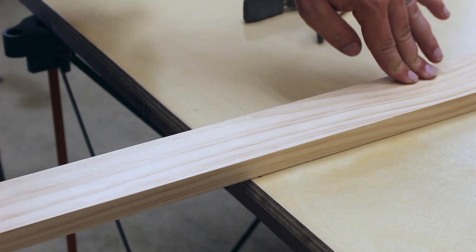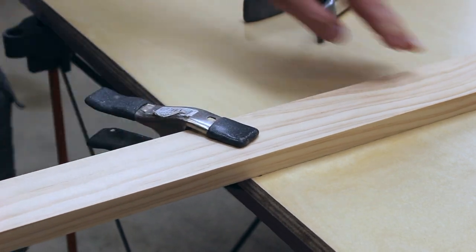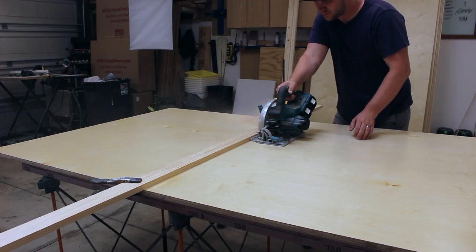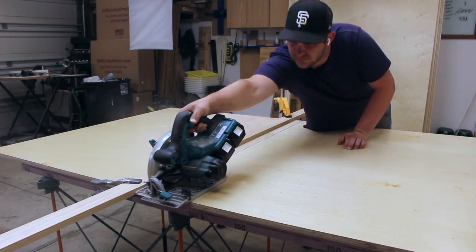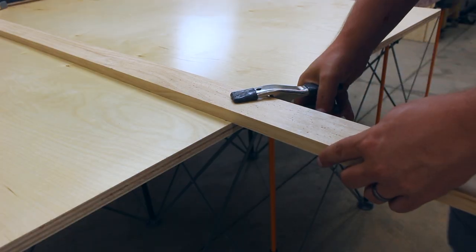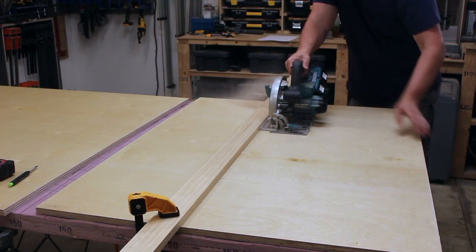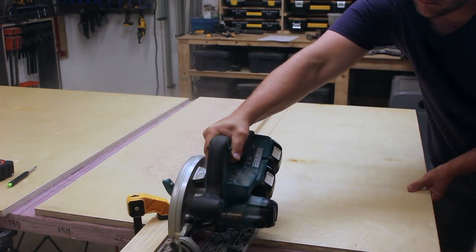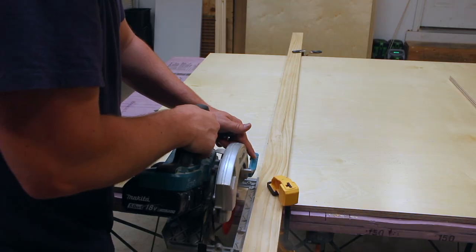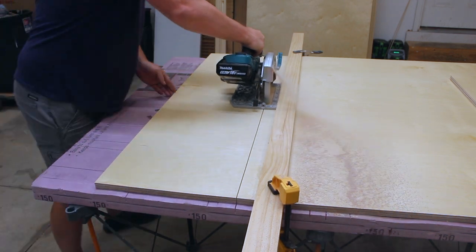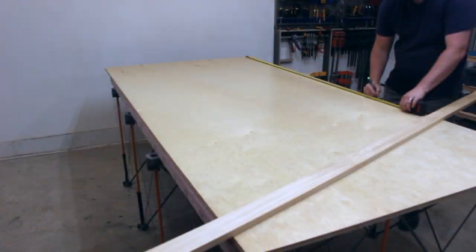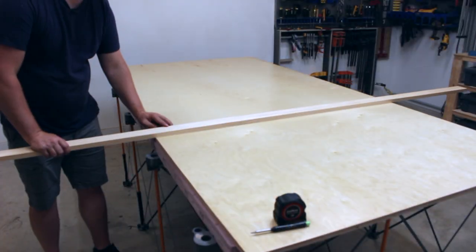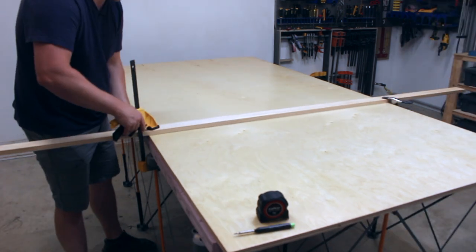Then just place your guide board on your mark and clamp it down. As you're cutting, make sure you're keeping that base plate tight against the board to get a nice straight cut. Just remember the steps: measure, mark, clamp, and cut.